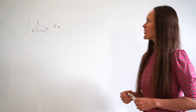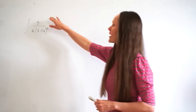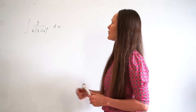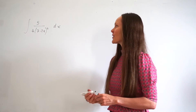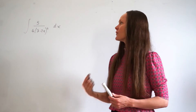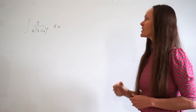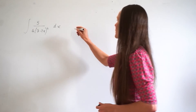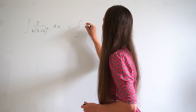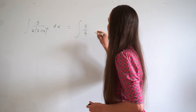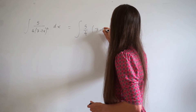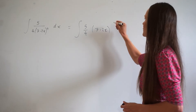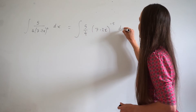In this question we have to find the integral of 5 over 4 times (7 minus 2x) raised to the power of 5 with respect to x. Just like previously, the first thing you should do is rewrite the question in power form. So we're finding the integral of 5 quarters times (7 minus 2x) raised to the power of negative 5 with respect to x.